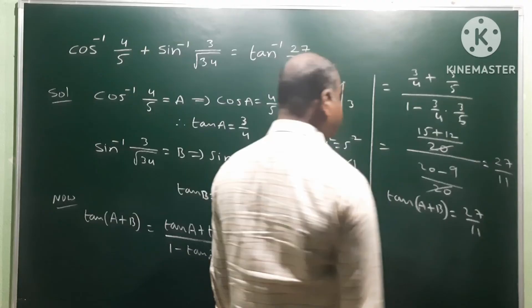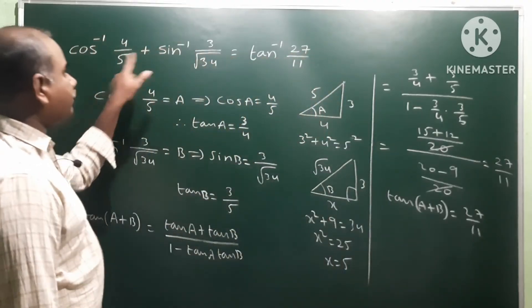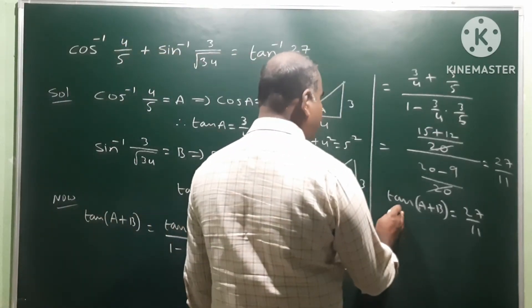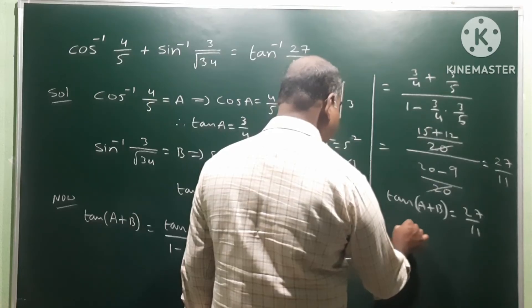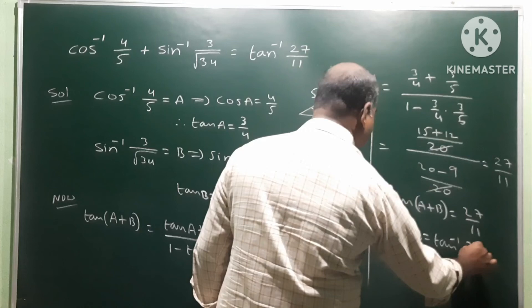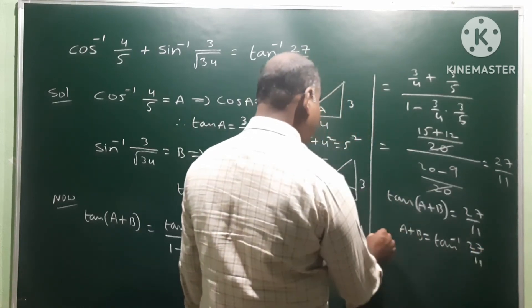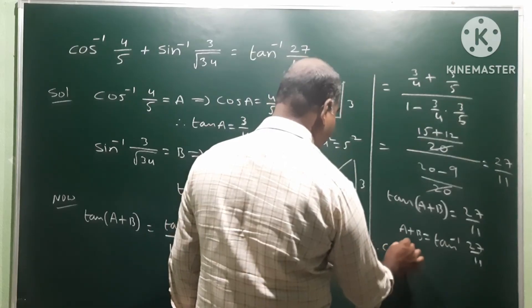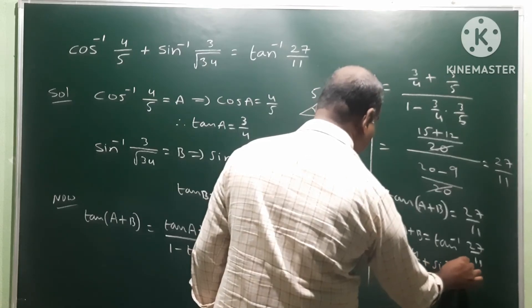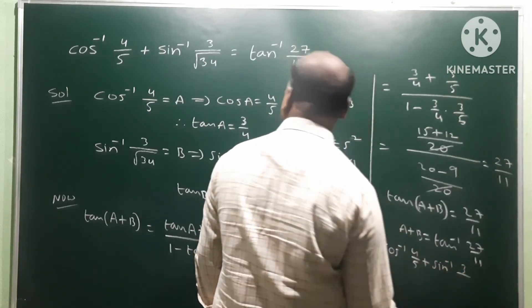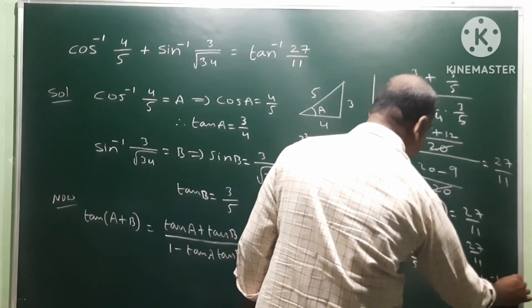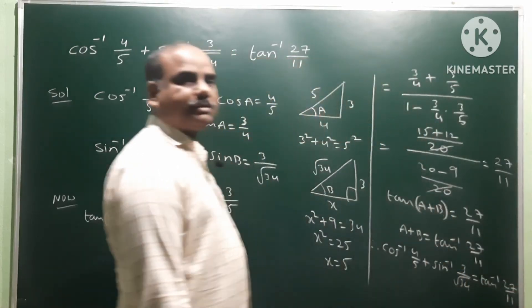Therefore a plus b equals tan inverse 27 by 11. So converting, it becomes a plus b equals tan inverse 27 by 11. Therefore cos inverse 4 by 5 plus sin inverse 3 by root 34 equals tan inverse 27 by 11. That is the solution.